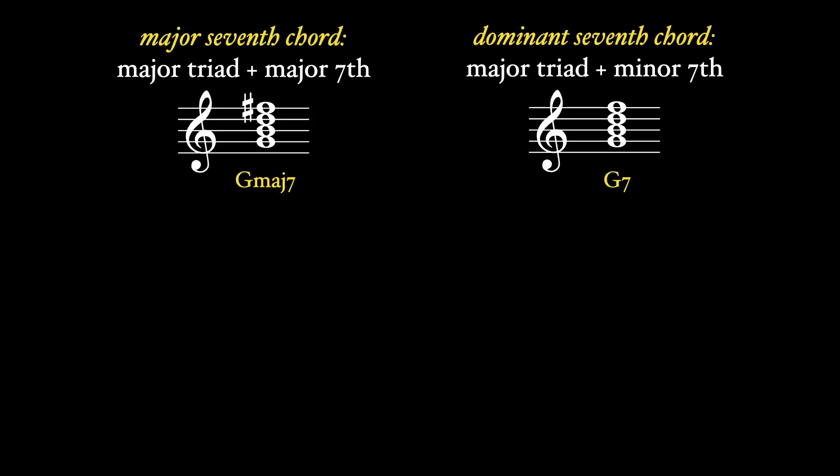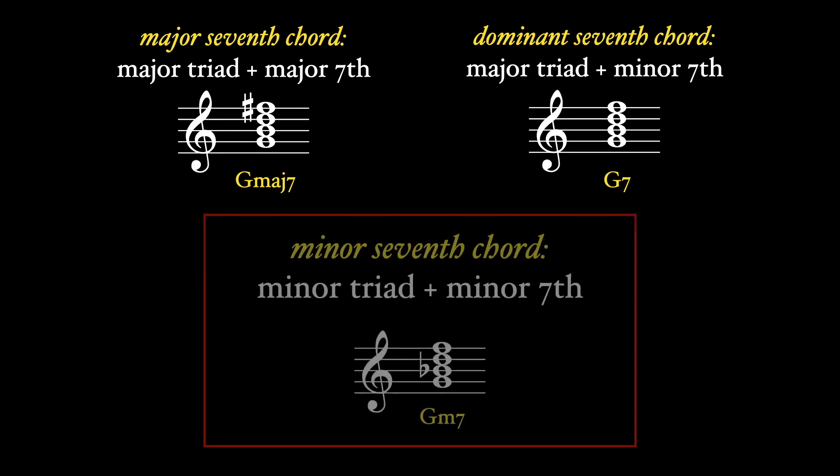There are three other types of seventh chord you'll commonly encounter in tonal music. The minor minor seventh chord contains a minor triad plus a minor seventh.